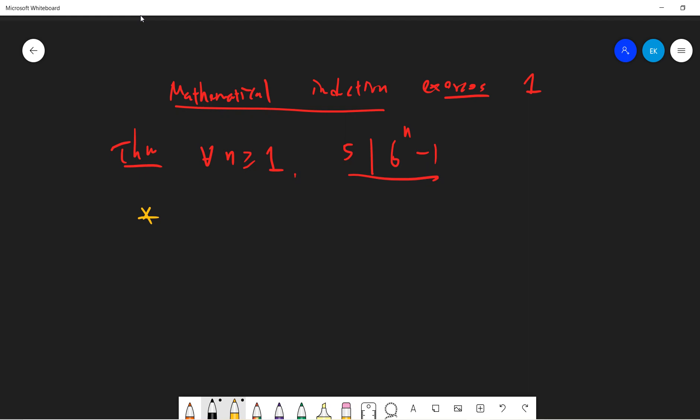So first one says that let's say I use k equals 1. So we know that 6 minus 1 is 5, right? So 5 divides 5.